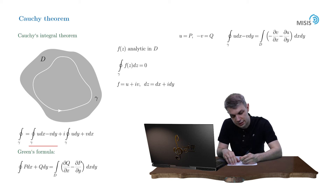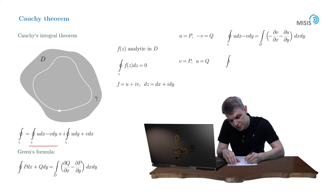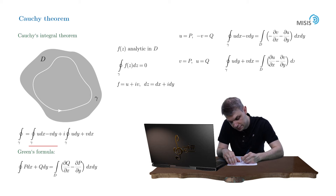For the second integral, v plays the role of p while u plays the role of q. And it is transformed into the double integral of ∂u/∂x minus ∂v/∂x, dx·dy.